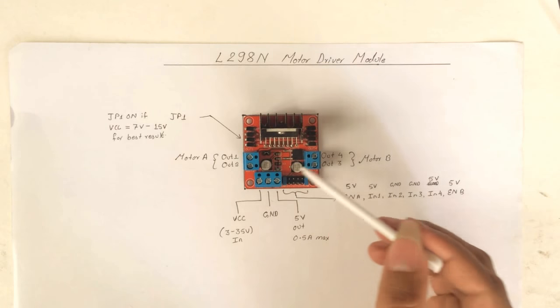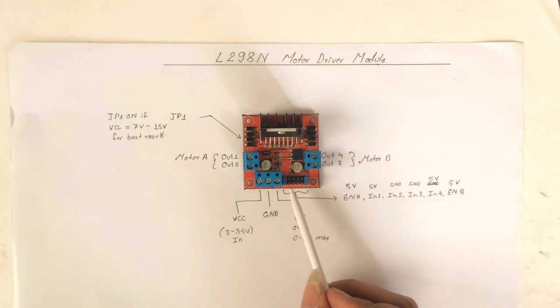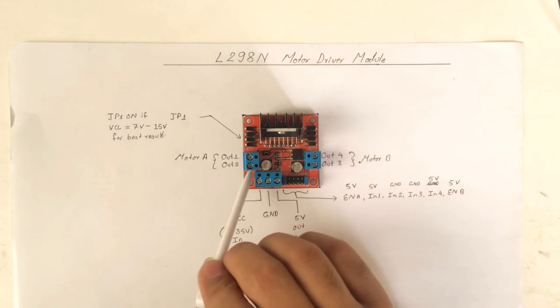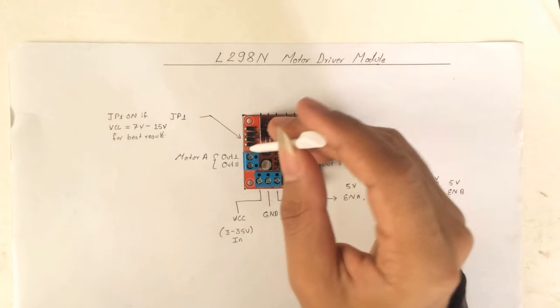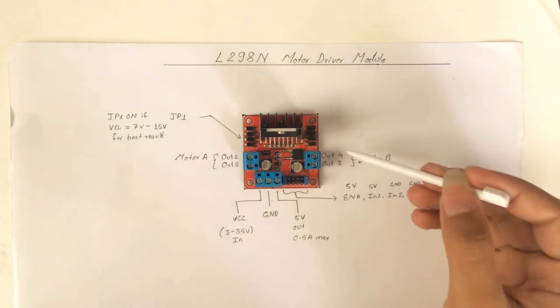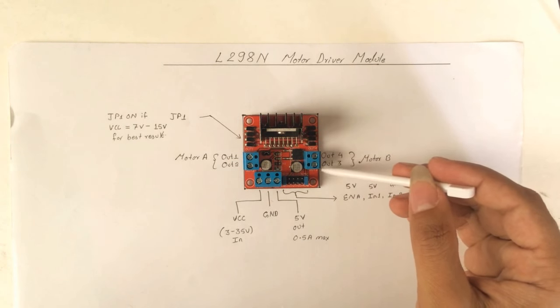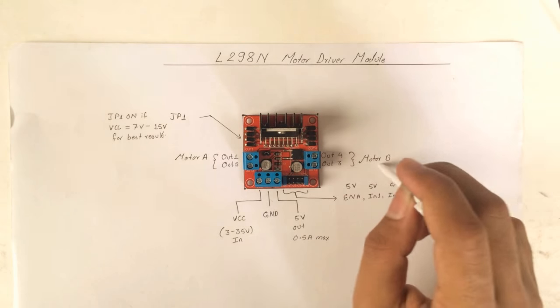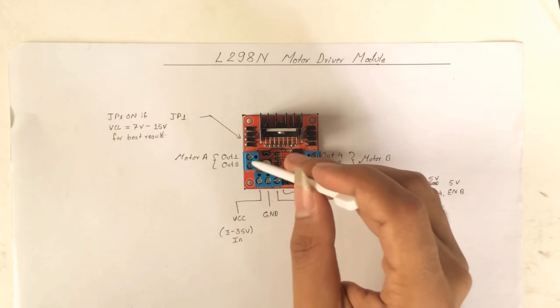We have three terminal connectors and one signal connector. This connector written as OUT1 and OUT2 are for Motor A, and the other one OUT3 and OUT4 are for Motor B. In this connector we will be connecting our motors with our wire inserted here.